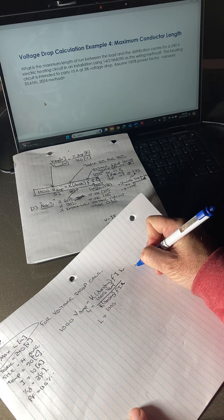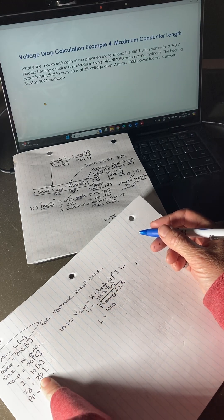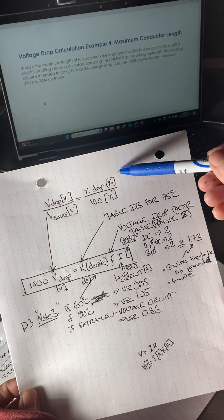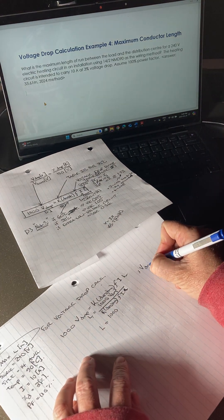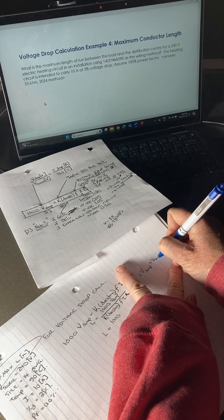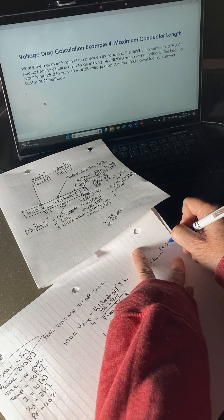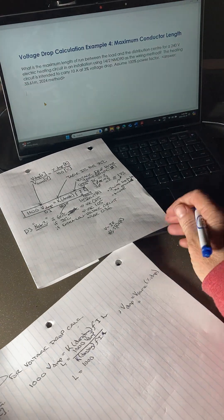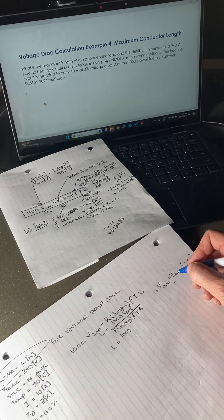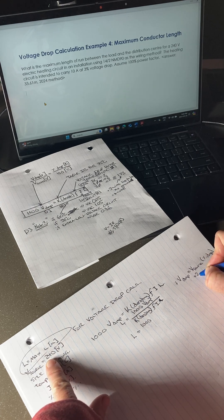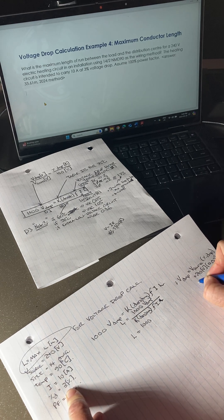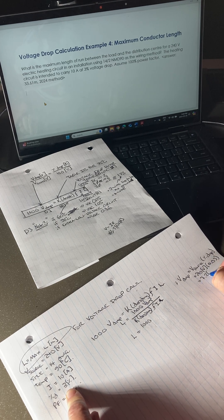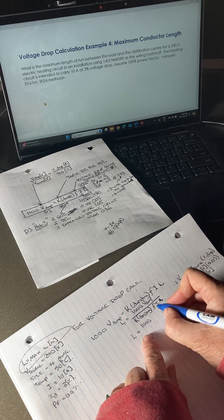The voltage drop — that's the actual voltage dropped — is 3% of 240 volts. From first principles: voltage drop equals voltage source times percent drop as a decimal. So that's 240 volts times 0.03, which equals 7.2 volts. So 7.2 volts is my voltage drop — I'll substitute that in.